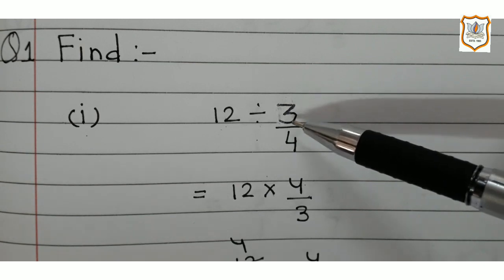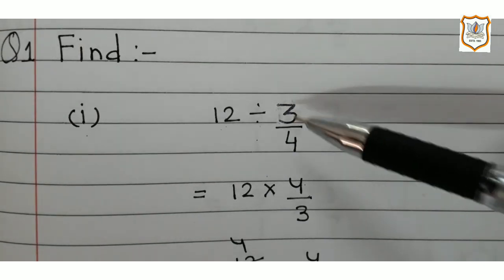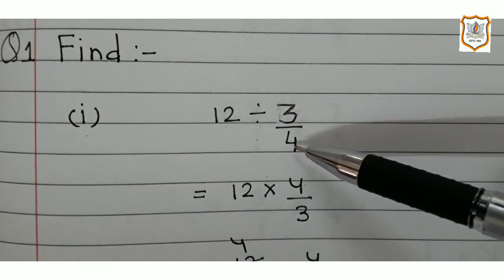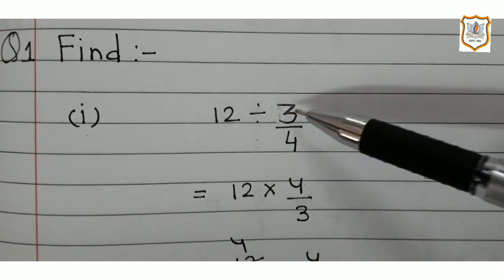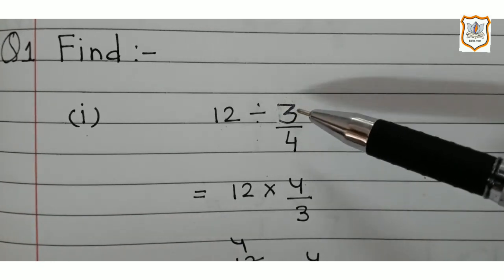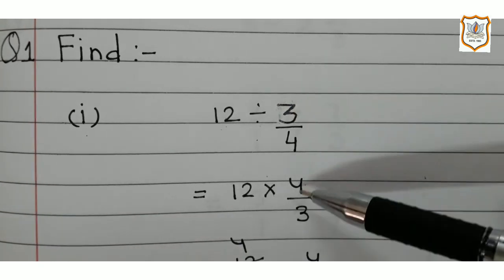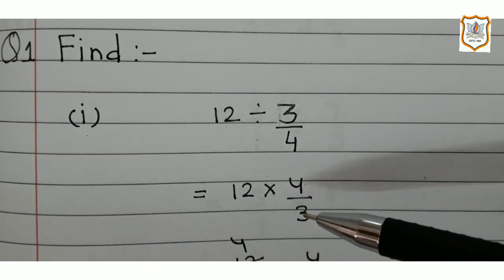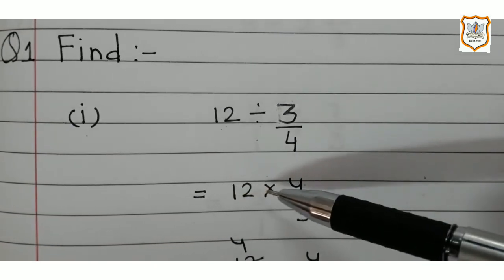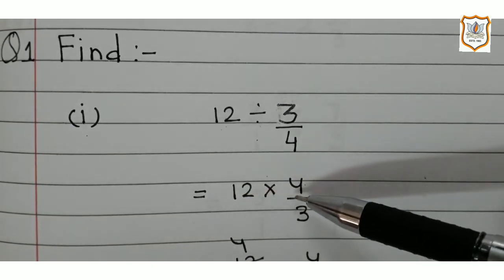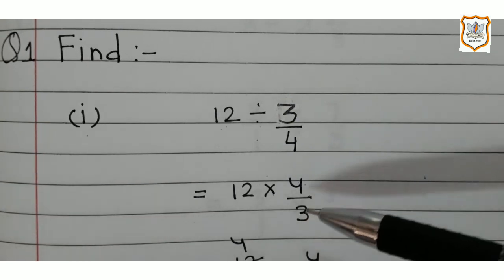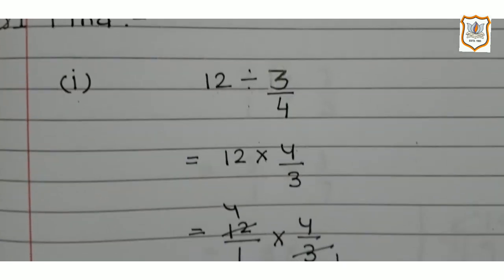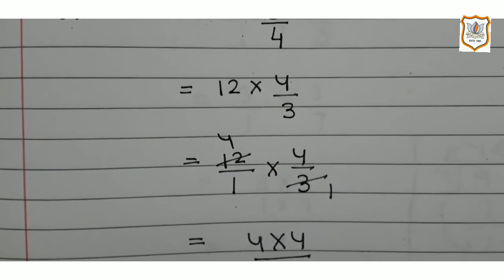It means that this numerator will become denominator and this denominator will become numerator. So, reciprocal of 3 upon 4 is 4 upon 3. Now, the sum will become 12 multiplied by 4 upon 3. Let's solve 12 multiplied by 4 upon 3.